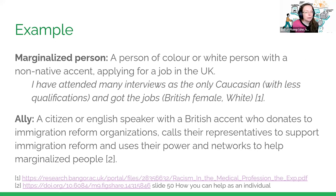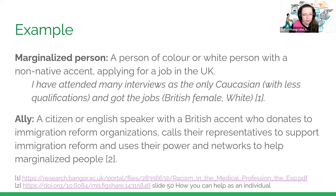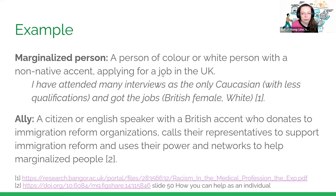Another example would be a marginalized person or person of colour trying to apply for a job in the UK, where the white person with a British accent got the job. People of colour have more difficulties getting through the selection because you can see this from their names, which are different, and then people make assumptions. So what an ally could do in these situations is basically call for reorganizations of these systems — call their representative to start immigration reform and really use their power and networks to help marginalized people, instead of just getting the job and then moving on.